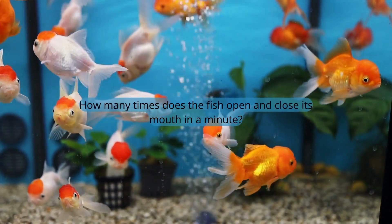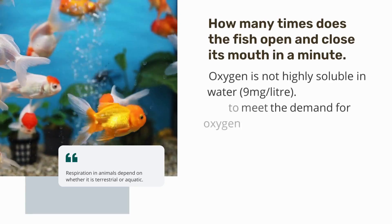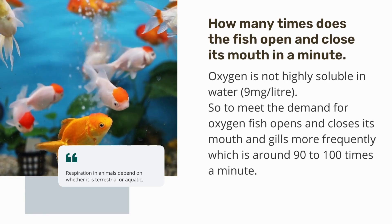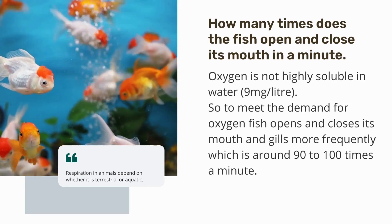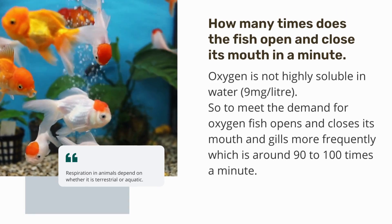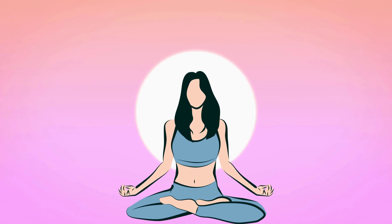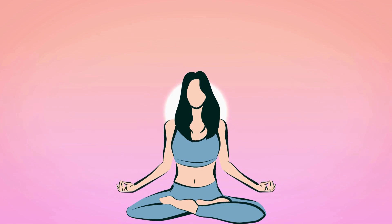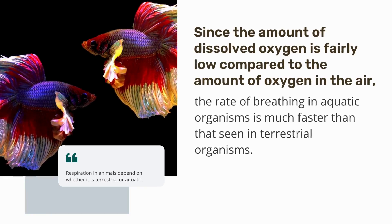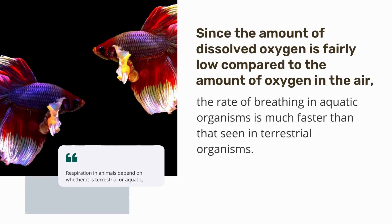How many times does a fish open and close its mouth in a minute? Well, oxygen is not highly soluble in water — only about 9 milligrams of oxygen per liter of water. To meet oxygen demand, fish open and close their mouths and gills around 90 to 100 times a minute, whereas a healthy adult human at rest breathes only 12 to 18 times per minute. Since dissolved oxygen is much lower than atmospheric oxygen, the breathing rate in aquatic organisms is much faster than in terrestrial organisms.